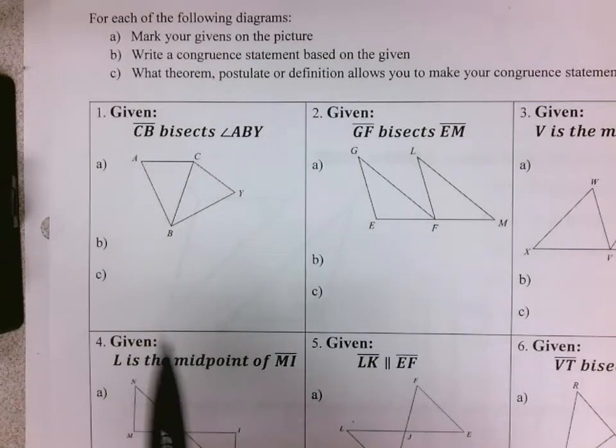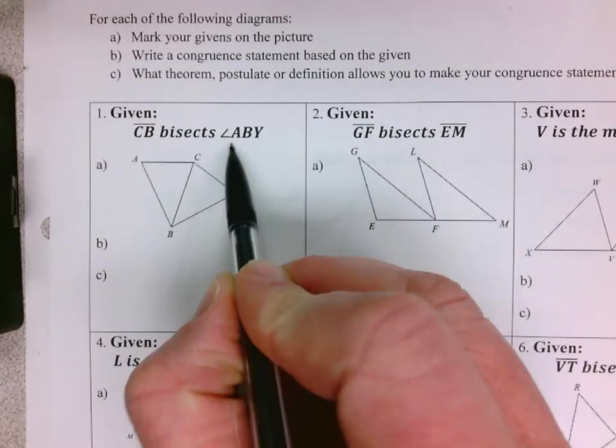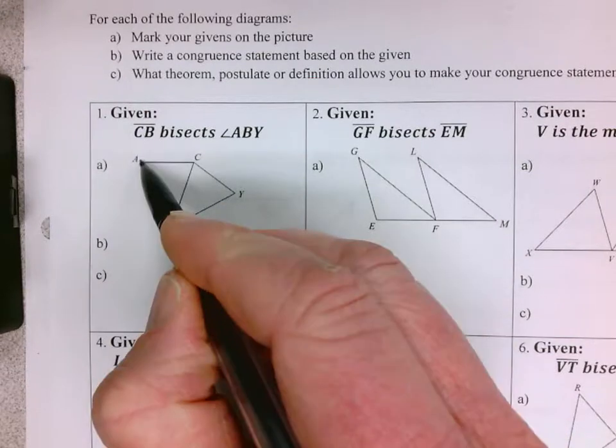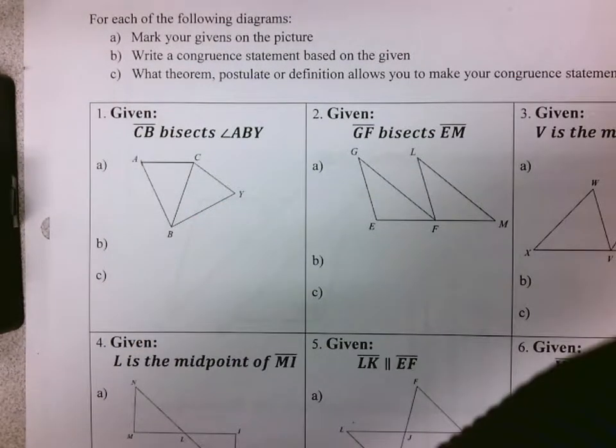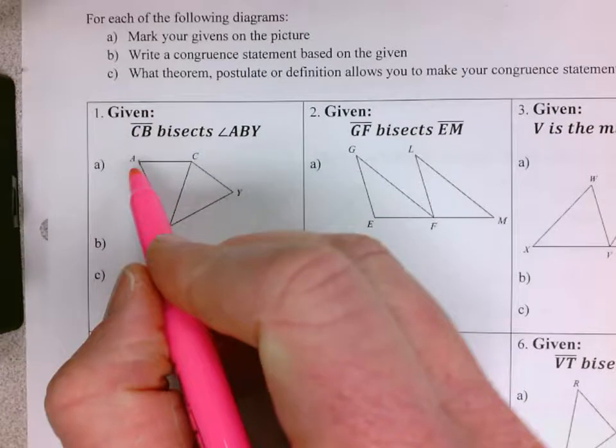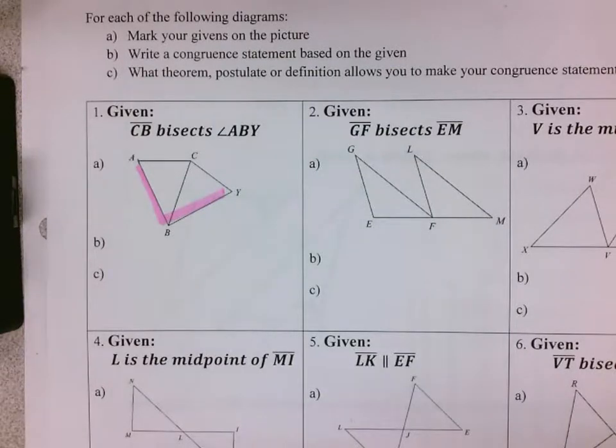Segment CB bisects angle ABY. A couple things to help yourself out: since CB touches two angles, we want to make sure that we mark which angle we're talking about. So angle ABY, and that means those two things are congruent.